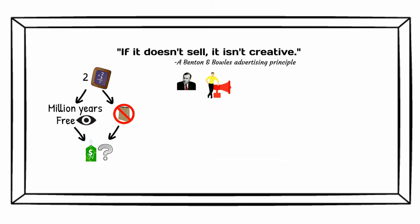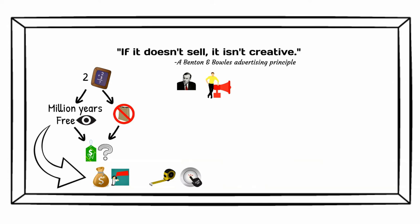My suggestion to you is this: have a paid ad and determine how good it is by the CTR — in other words, the percentage of people who click on it. Then use this metric to A/B test and increase your performance. A few variables you could test are the headline, thumbnail, subheading, and different audiences.